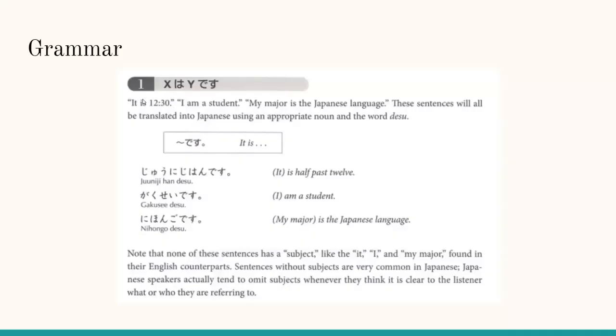Ee means yes. Arizona daigaku no gakusei desu means I am a student at the University of Arizona. Sou desu ka means I see. Senkou wa nan desu ka means what is your major? Nihongo desu means Japanese. Ima ninensei desu means I am a sophomore now. Grammar: It is 12:30. I am a student. My major is the Japanese language. These sentences will all be translated into Japanese using an appropriate noun and the word desu.